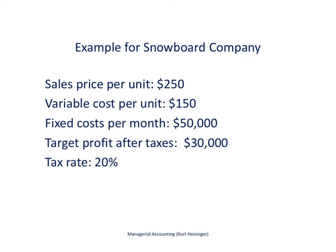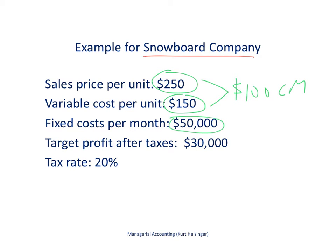Here's an example. A snowboard company produces one type of snowboard. The sales price per unit is $250, and the variable cost per unit is $150. The sales price per unit minus the variable cost per unit is the unit contribution margin, which is $100. The fixed costs per month total $50,000. Our target profit after taxes — step 1 — is $30,000, and the tax rate is 20%. Let's use all this information to figure out the target profit in units and sales dollars.